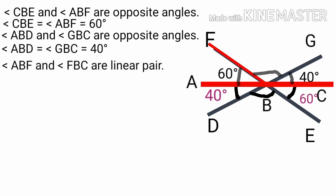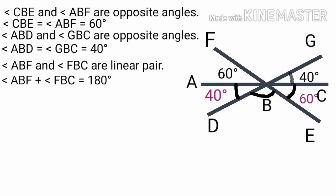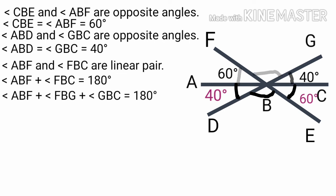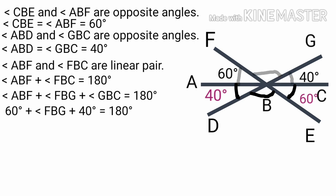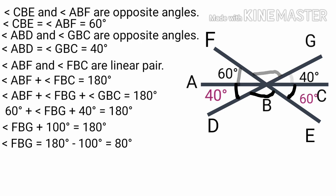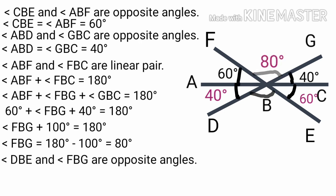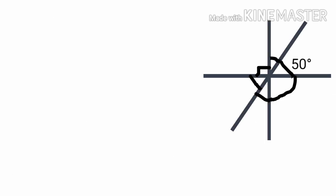FB is a line drawn to line AC. Therefore angle ABF and angle FBC are a linear pair. Therefore angle ABF plus angle FBC is equal to 180 degrees. Angle FBC equals angle FBG plus angle GBC is equal to 180 degrees. Therefore angle FBG is equal to 180 minus 60 minus 40 degrees, that is equal to 80 degrees.